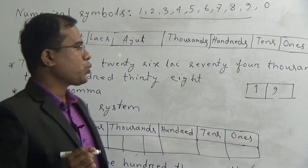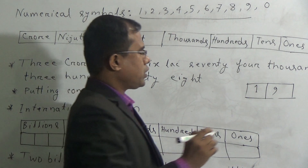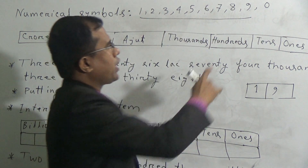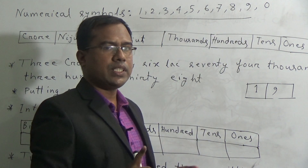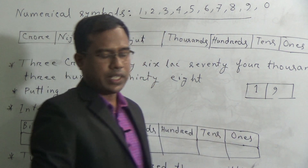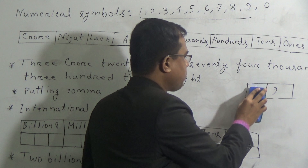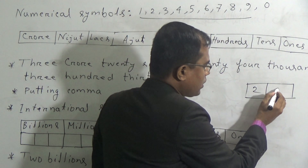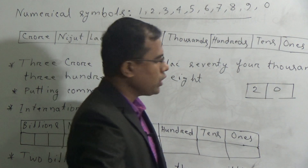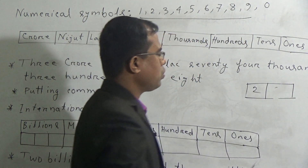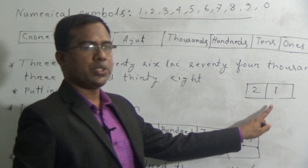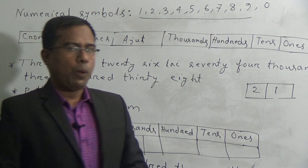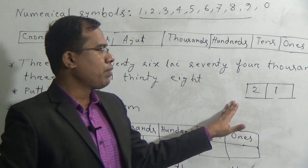Now, if we want to express 20, which digit will we use in the 1s place? There are no digits greater than 9. So we have to carry over to the 10s place. Instead of 1 in the 10s place, we have to put 2, and write 0 in the 1s place. For expressing 21, instead of 0, we put 1. For 22, we put 2 in the 1s place. In this process, we can express numbers up to 99.